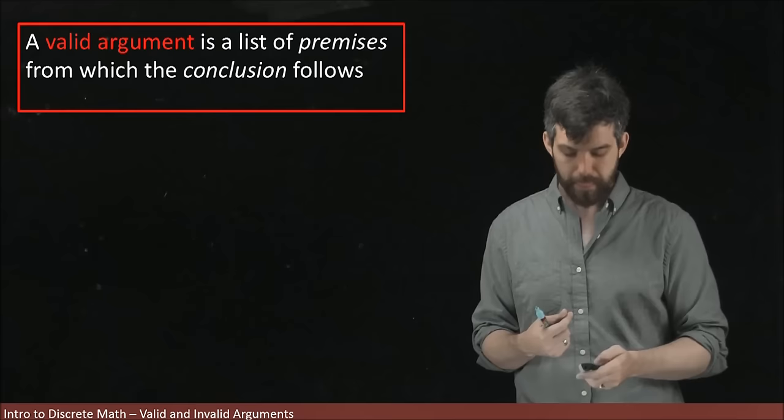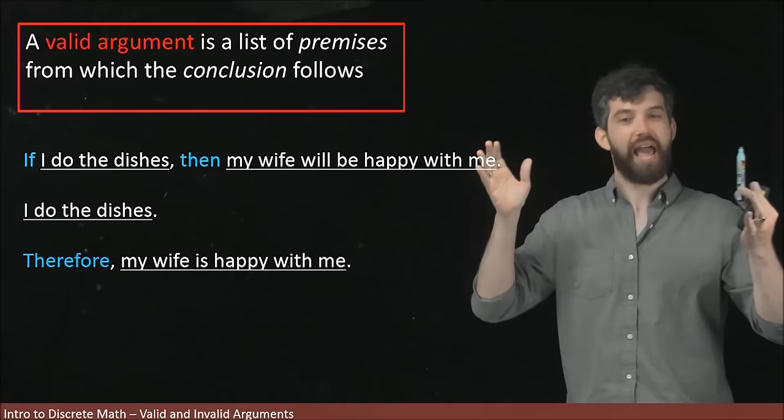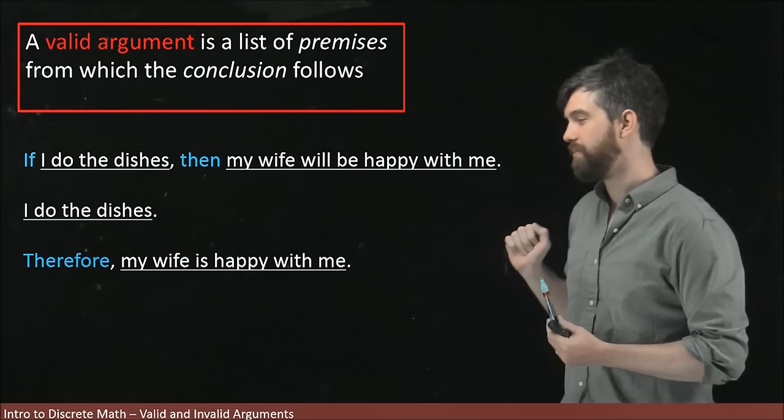So here's a sample argument. I've broken it up into a couple different parts. I say, first of all, if I do the dishes, then my wife will be happy with me. This is just a premise. I'm not saying it's a true premise, not saying it's a false premise, but it is a statement, and in particular, it's conditional. Then I'm going to make the claim, I do the dishes. And then the conclusion here is that my wife is happy with me.